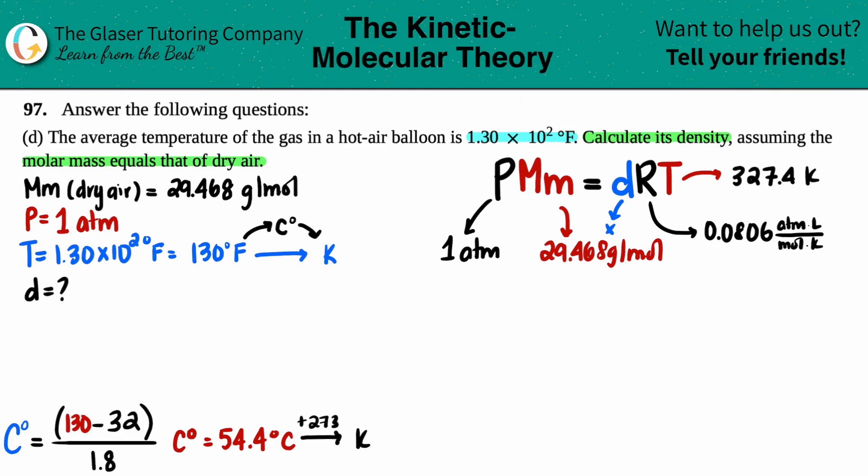Okay. Now we're ready. Let's see. So I got 1 times the 29.468 equals, we're looking for that density. So I'm just going to label that as X. Next comes the R value, 0.08. Oh, whoa, whoa. This should be 0.082. There we go. 0.08206. And then times it by that Kelvin value, 327.4.